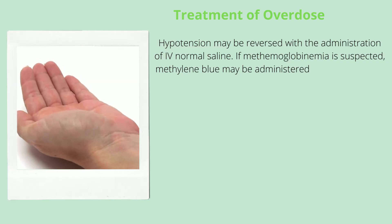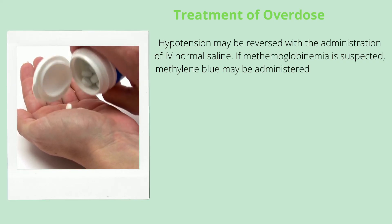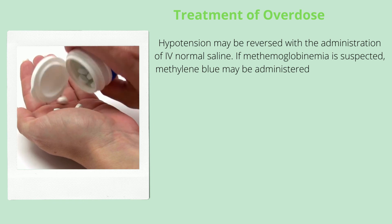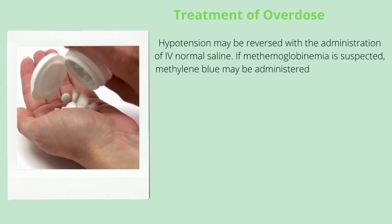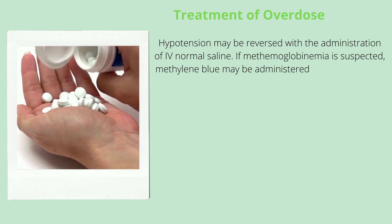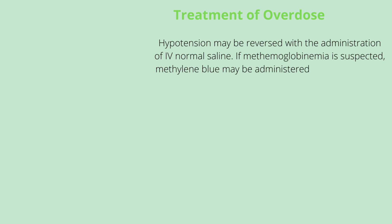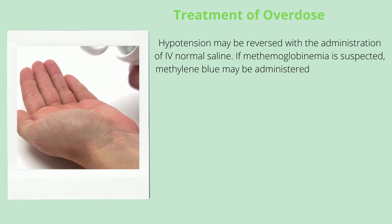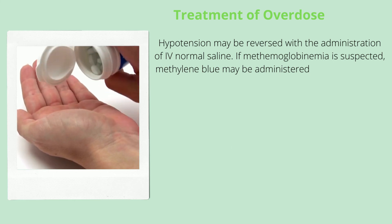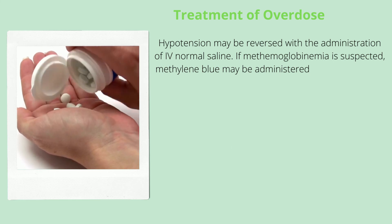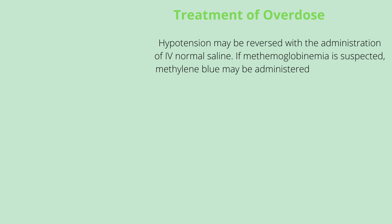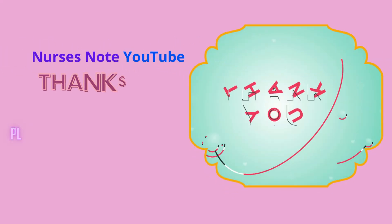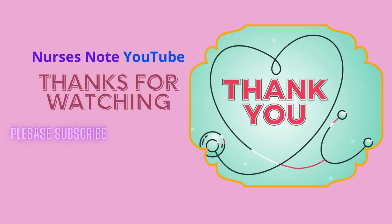Treatment of Overdose. Hypotension may be reversed with the administration of IV normal saline. If methemoglobinemia is suspected, methylene blue may be administered. Thanks for watching. Please subscribe to our channel.